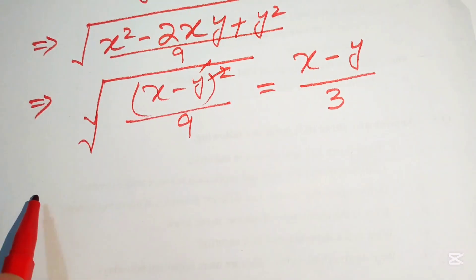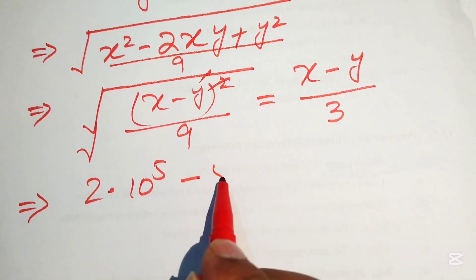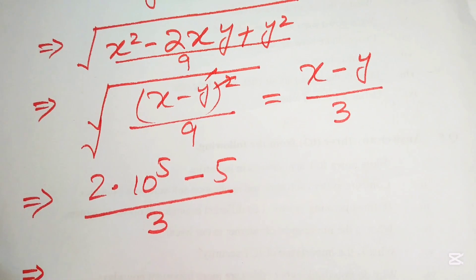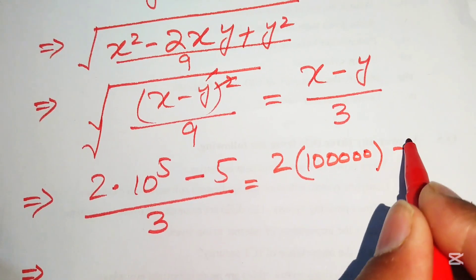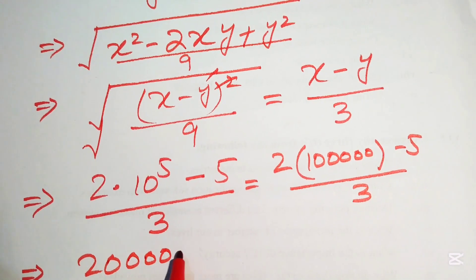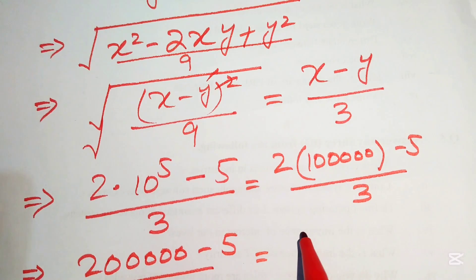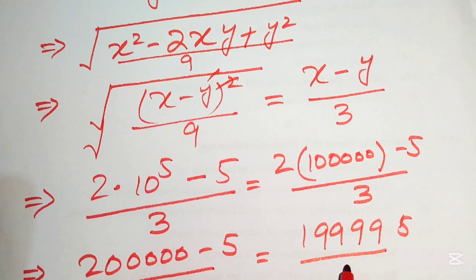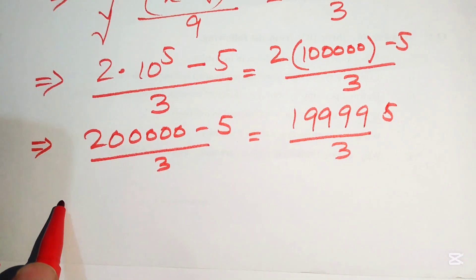Back-substituting: x = 2 × 10^5 = 2 lakh = 200,000 and y = 5. So we have (200,000 − 5) / 3 = 199,995 / 3.